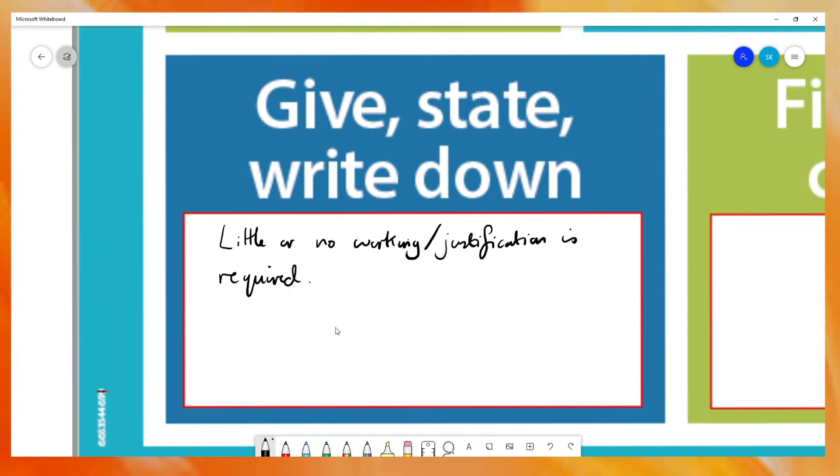For instance, if you have a triangle that is a right angle triangle and you know that three and four, the question may say write down the value of x or the value of x is five and you wouldn't need to show any working for that. It's that kind of thing.